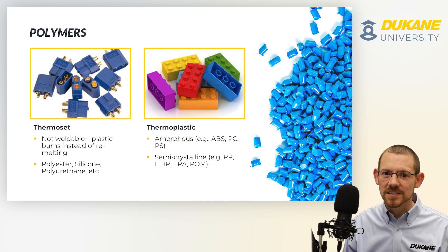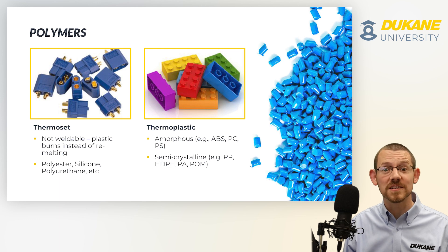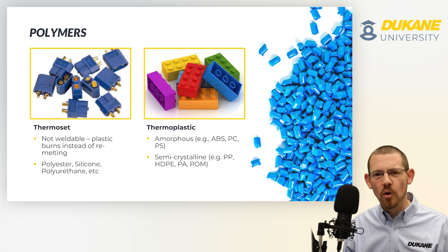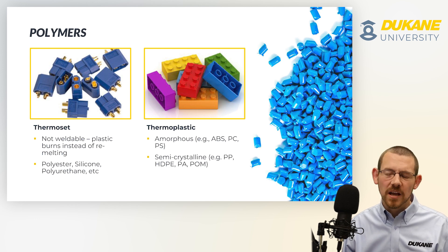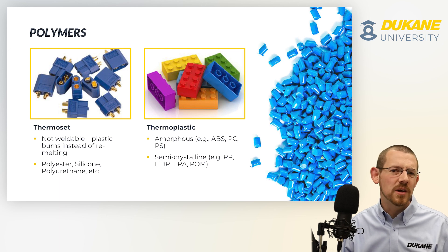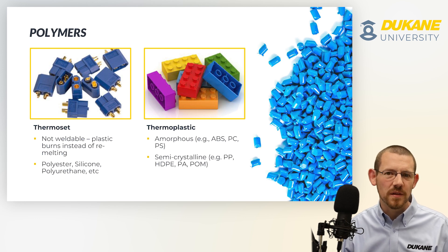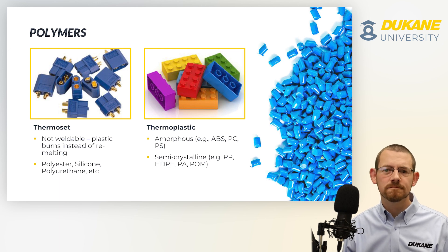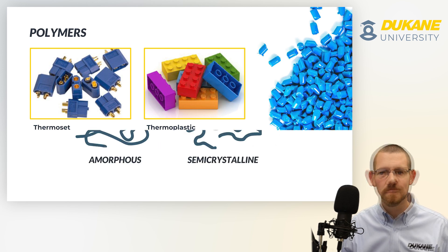Thermoplastic resins, on the other hand, are almost universally processable with ultrasonics. They come in two families: amorphous and semi-crystalline. Amorphous resins are things like polycarbonate, ABS, polystyrene. Semi-crystalline resins are things like polypropylene, high-density polyethylene, nylon, Delrin, things like that.